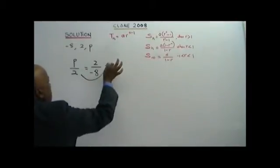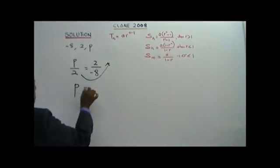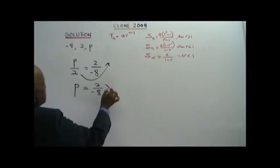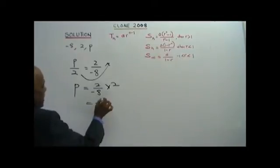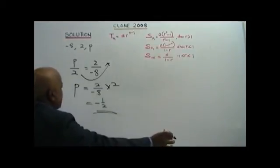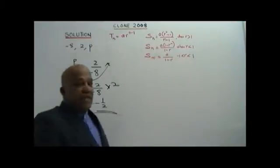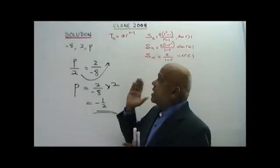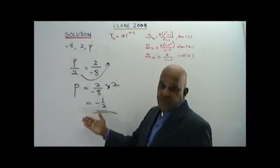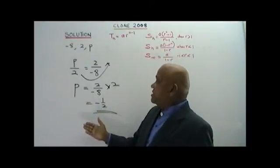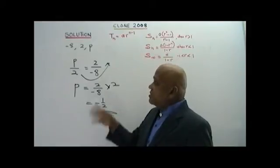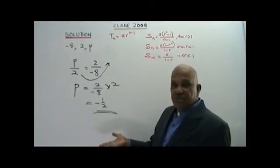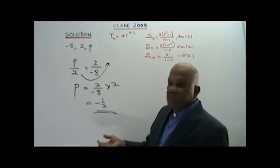You take the 2 up, so P equals 2 over negative 8 times 2, giving you negative one half. That is your answer — the value of P is negative 1/2. See, just the technique of common ratio — the right term divided by the left term. Very simple. I hope you have got it. Thank you.